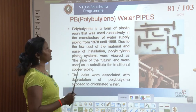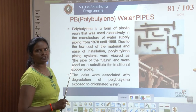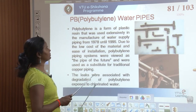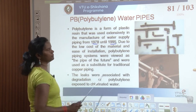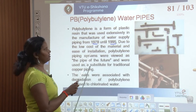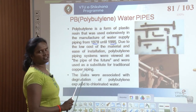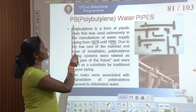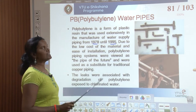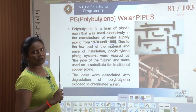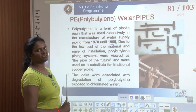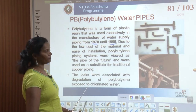Then we have PB water pipes — polybutylene. Polybutylene is a form of plastic resin used extensively in water supply piping from 1978 to 1995. After 1995 it was banned and is no longer used. The reason is that when chlorinated water is passed through it, the material used to react, making it dangerous to human health. Earlier it was considered the pipe of the future, but now it is completely banned.